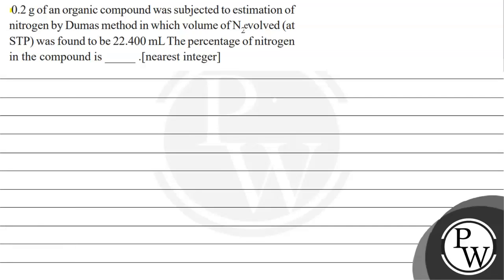Hello, let's read this question. The question says: 0.2 gram of an organic compound was subjected to estimation of nitrogen by Dumas method, in which volume of nitrogen evolved at STP was found to be 22.4 milliliters. The percentage of nitrogen in the compound is [nearest integer].